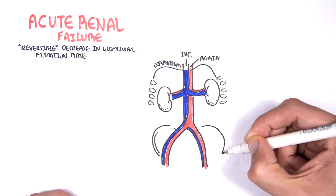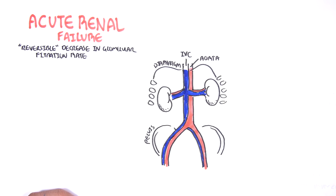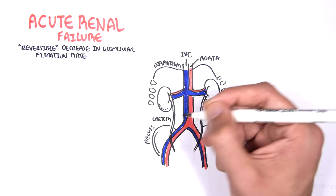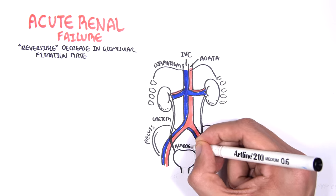And now the kidneys, as we know, produce urine, which will travel through the ureter and go to the bladder. And urine is stored in the bladder. And when needed, the bladder will contract and expel urine through the urethra.